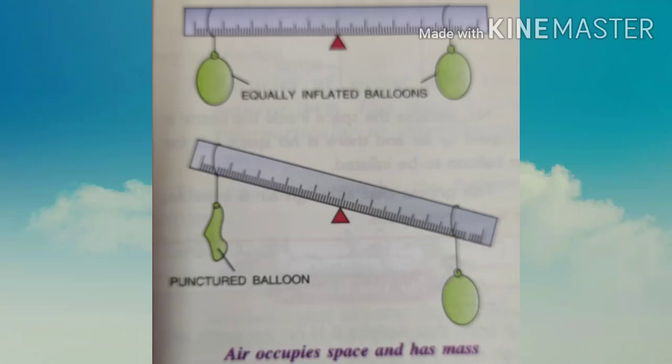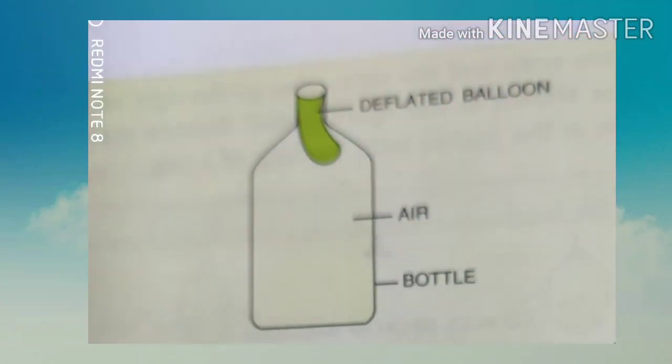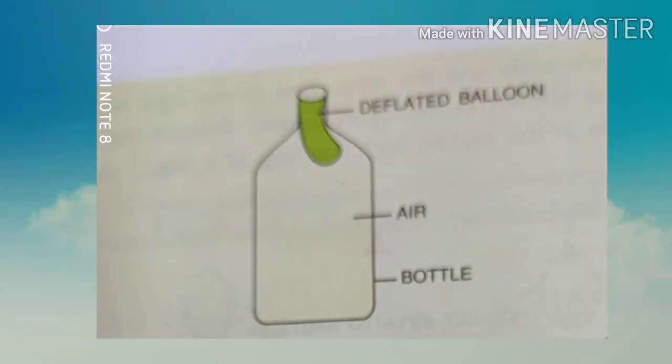Air is invisible, but it occupies space — this can also be proved by an activity. Take a plastic bottle, push a deflated balloon into it, and stretch the open end of the balloon over the bottle's mouth. Now try to blow and inflate the balloon. The balloon does not get inflated, because the space inside the bottle is already occupied by air and there is no space left for the balloon. This proves that although air is invisible, it still occupies space.